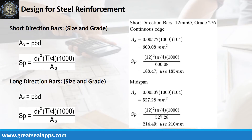At short direction, given continuous edge ρ equals 0.00577, B equals 1,000 mm and D equals 104 mm. The area of steel is 600.08 square millimeters, and the spacing for 12 mm bar is 185 mm.